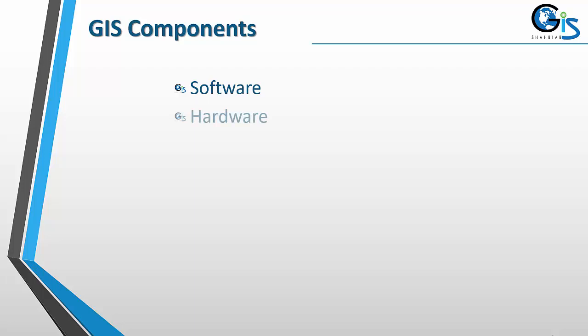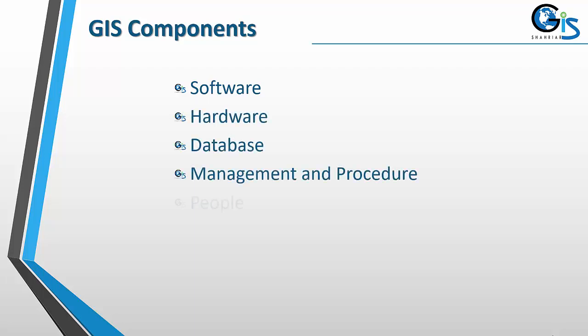Now let's see GIS components. These are the components of GIS: software, hardware, database, management and procedure, people and network.